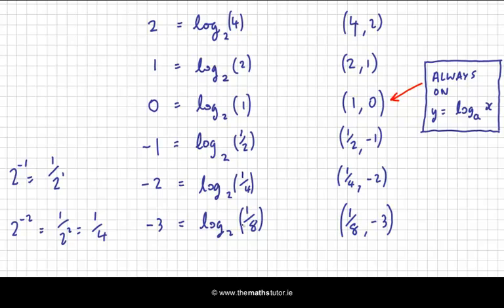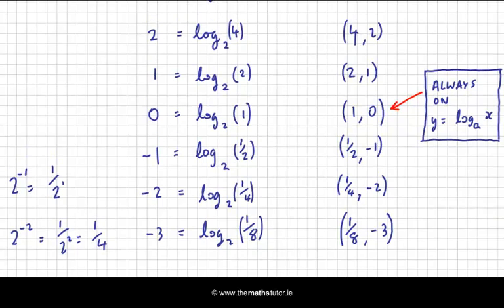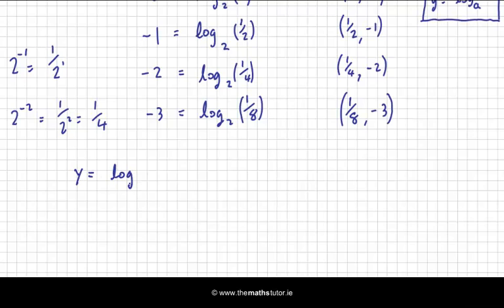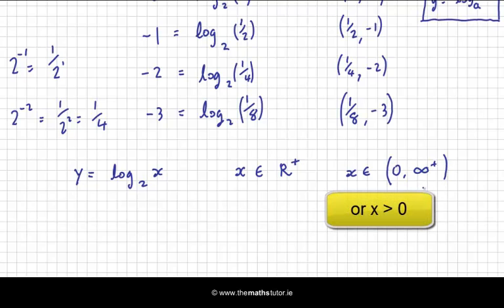Now, my x coordinates here will have to be positive, because 2 to the power of any number will give me a positive number. So it's only possible for me to substitute positive x values into this function. With my general format y equals log of x to base 2, you would generally say x is an element of the positive reals, or x is an element of the set from 0 to plus infinity — just the positive part of the x axis. Zero wouldn't be included, because 2 to the power of something always gives you some positive value, and 2 to the power of a negative value just gives you a fraction. So let's try and plot this now.